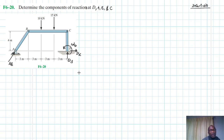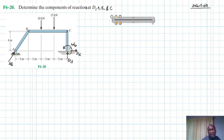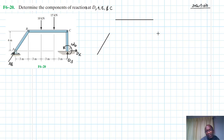We have more reaction forces than available equations of equilibrium, so we need to dismantle this frame. We'll have the top member, then another member — the two-force member AB — and then member CD. We have two applied forces: 10 kilonewtons and 15 kilonewtons.